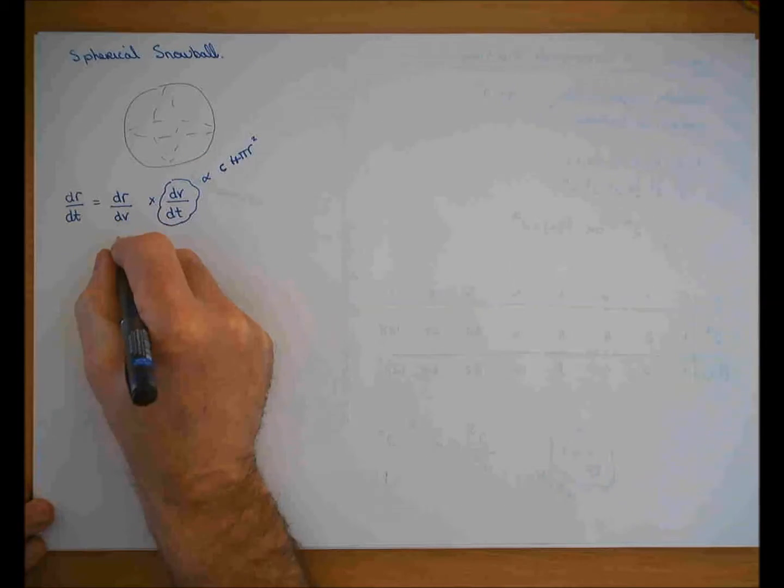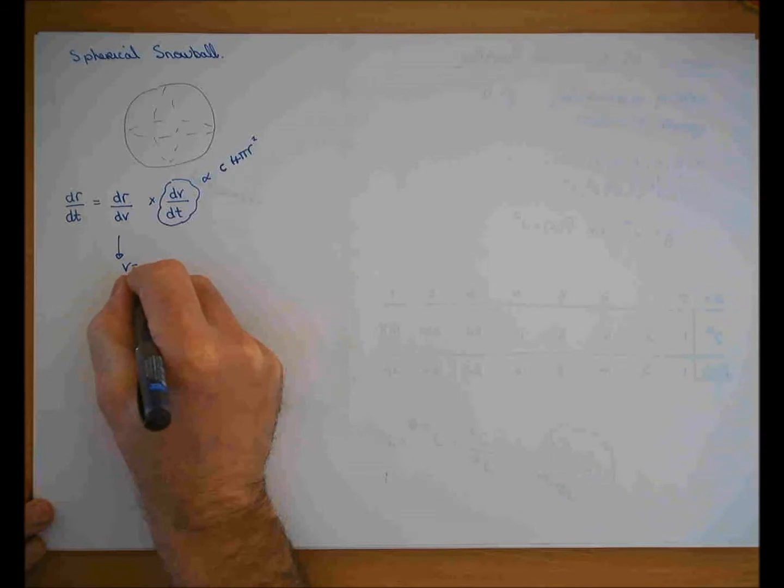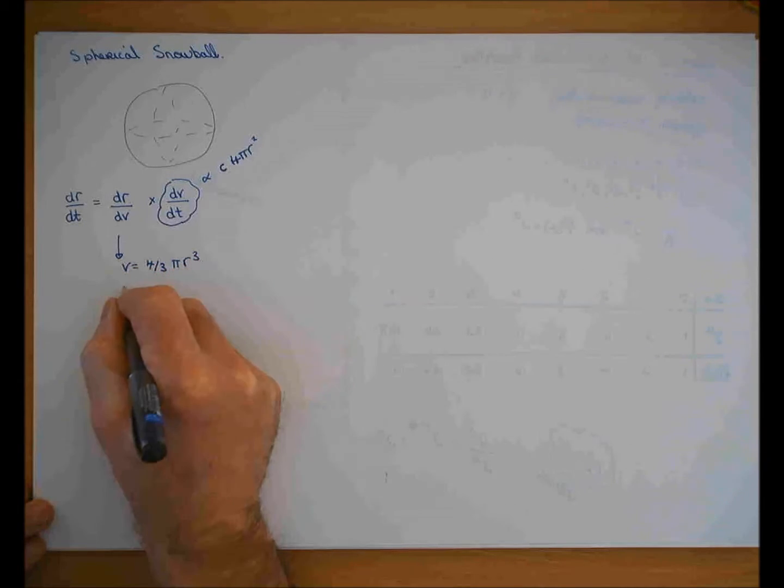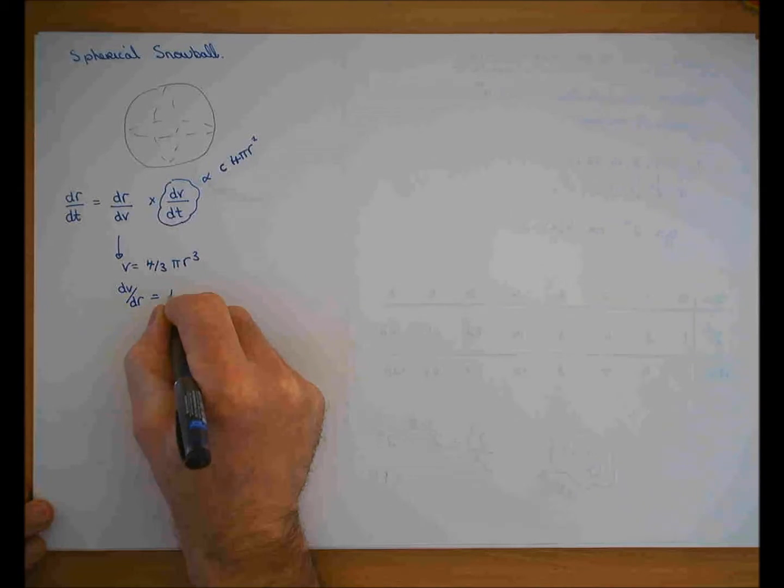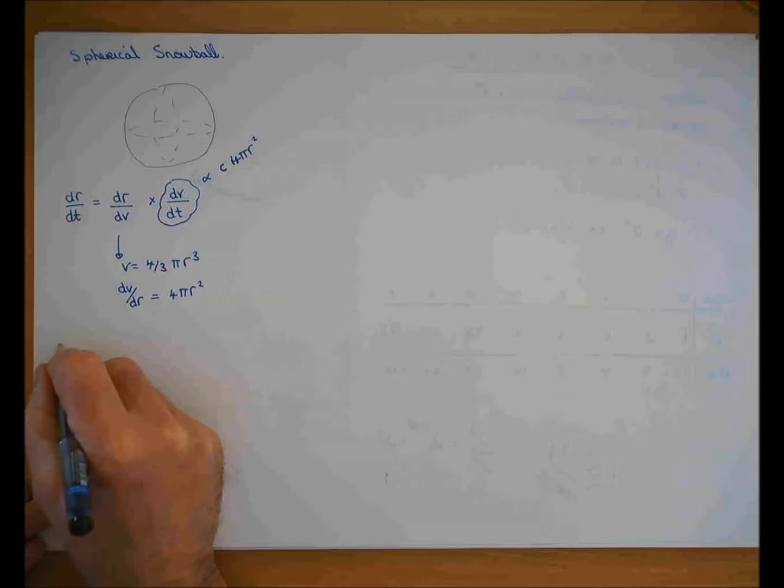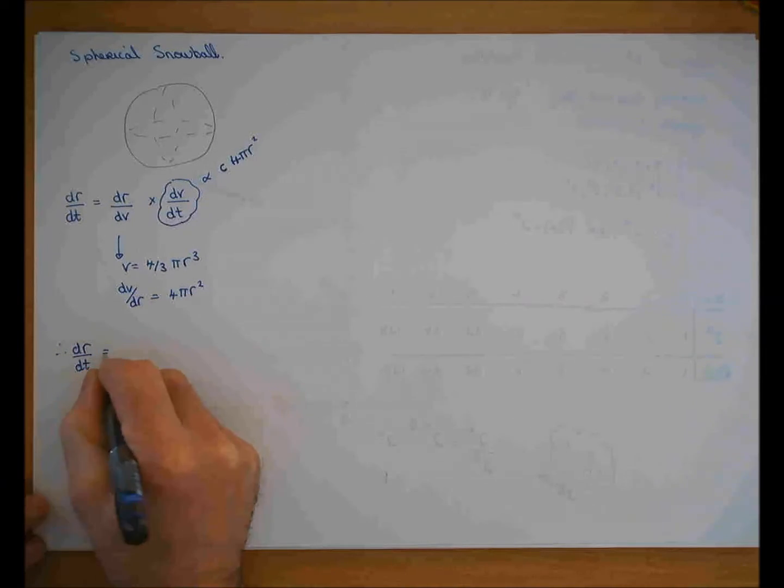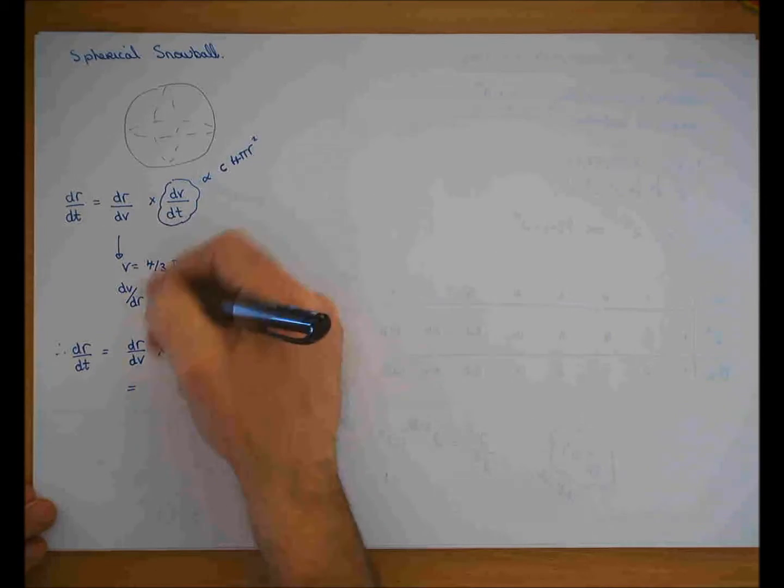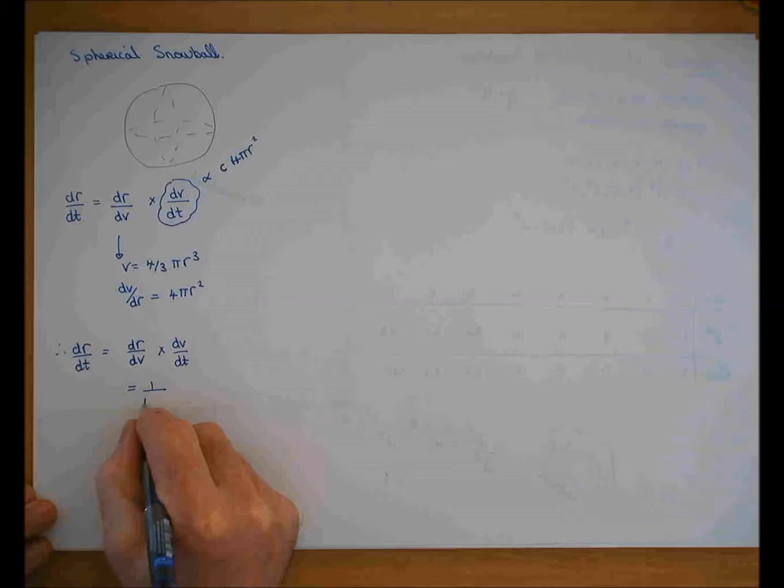The dr/dV, well I can find that. The volume is equal to 4/3πr³, so therefore dV/dr is equal to 3 times that, 4πr². So therefore I can now get dr/dt. The rate of decrease of the radius is dr/dV by dV/dt. If dV/dr is that, dr/dV is that upside down, 1 over 4πr² times